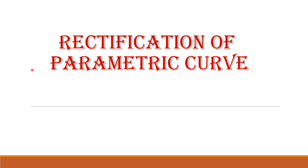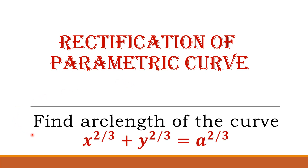Hello students. In today's lecture, we are going to solve an example on rectification of a parametric curve. Rectification is the process of finding the arc length of the given curve. We will consider the following example: find the arc length of the curve x raised to 2/3 plus y raised to 2/3 equals a raised to 2/3, which is the well-known curve known as the asteroid.